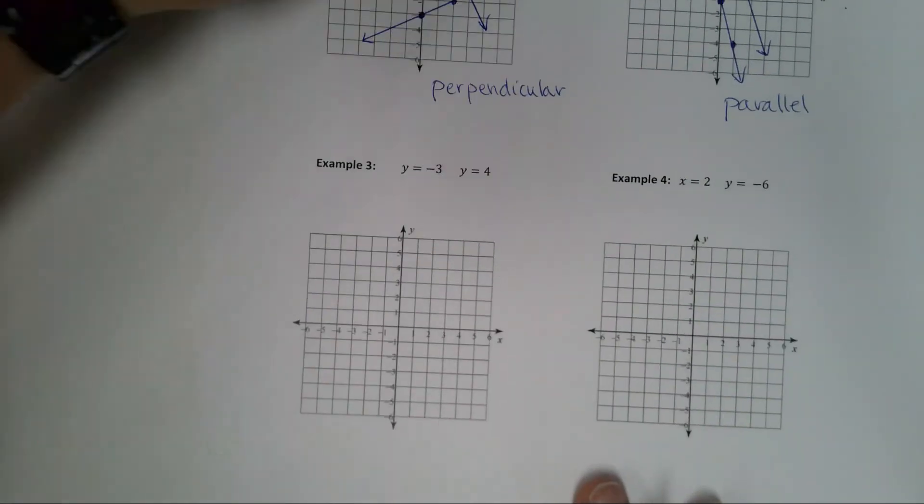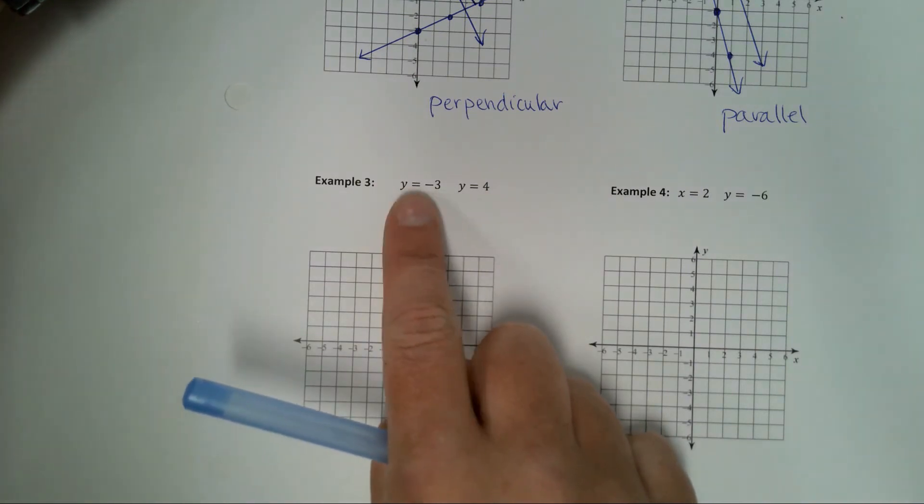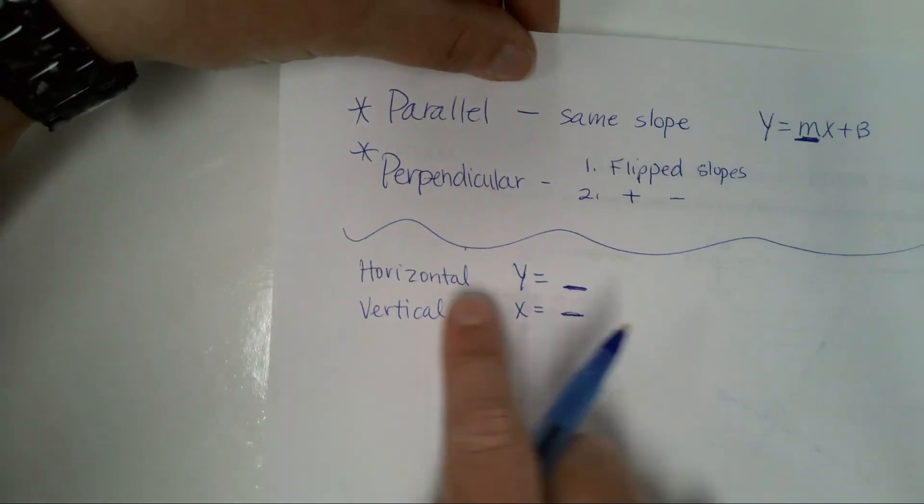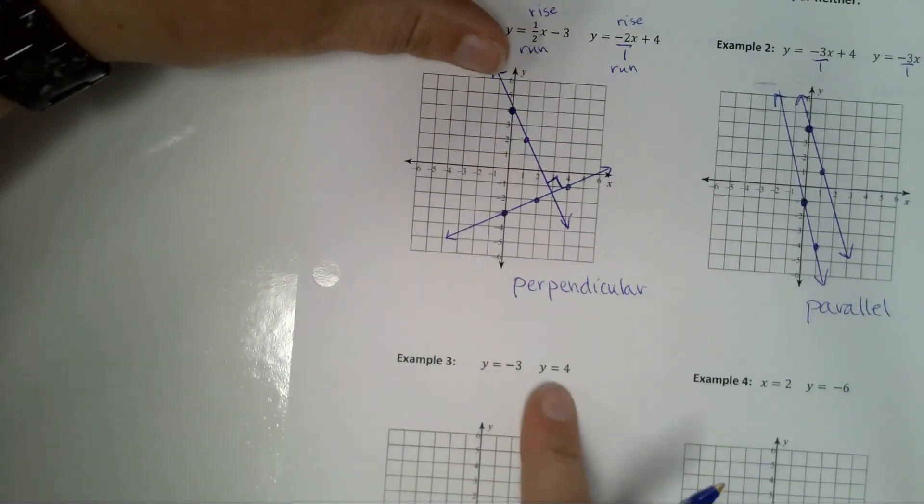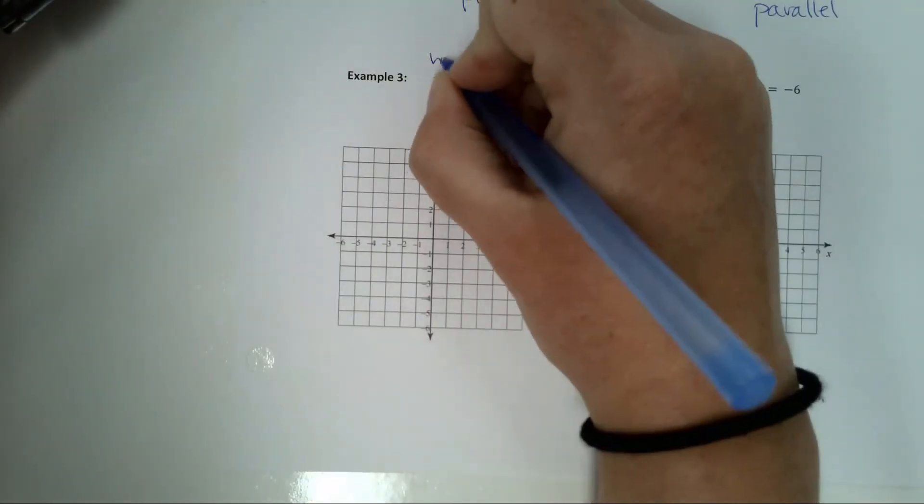For example 3, something is different here. This is not y equals mx plus b, is it? There's no x here. Anytime you see that, if it's y and some number, I know this is going to be a horizontal line. So this is a horizontal line, and this is also a horizontal line. Both of these are going to be horizontal lines. I'm going to just make that note.